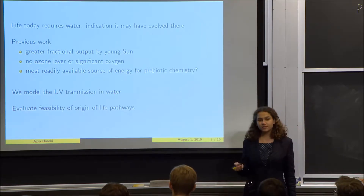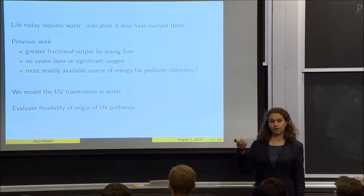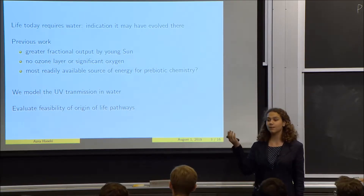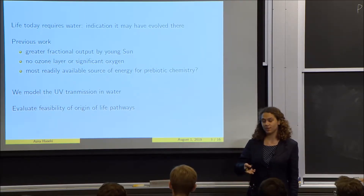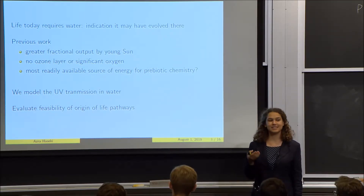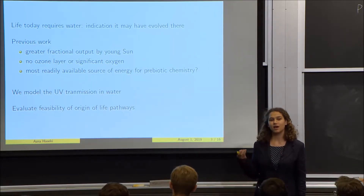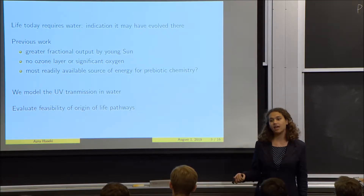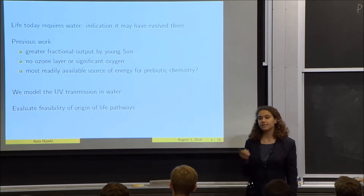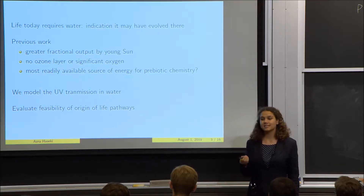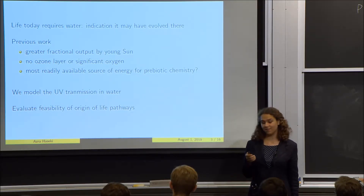Previous work has characterized the UV output of the young sun. We know it had a much greater fractional UV output, and we know how it traveled through the atmosphere, because the early Earth's atmosphere didn't have appreciable oxygen — one of the main shielding factors for UV today. Our work focused on how UV travels through the waters of the prebiotic Earth, since life today requires water.